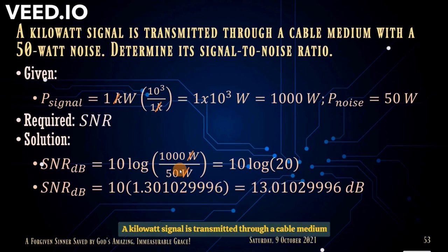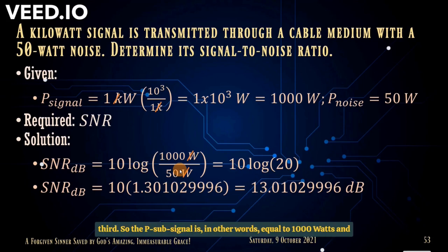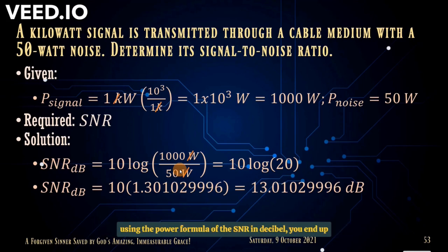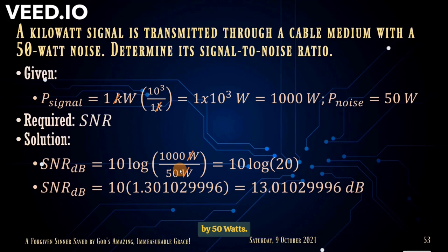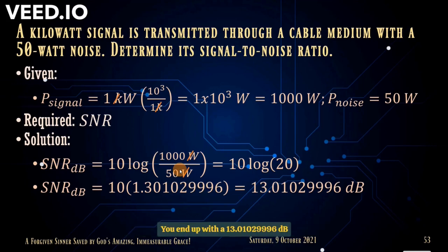Another problem related to power: A 1 kilowatt signal is transmitted through a cable with 50 watts of noise. Determine the signal-to-noise ratio. P_signal = 1 kW = 1000 W, P_noise = 50 W. Using SNR (dB) = 10 × log(P_signal / P_noise) = 10 × log(1000/50) = 10 × log(20) = 10 × 1.30103 = 13.01 dB.